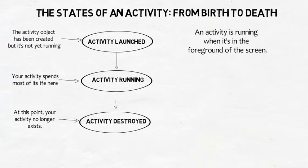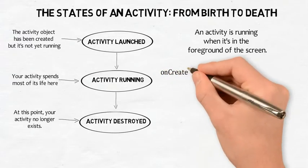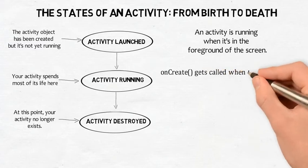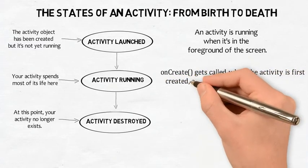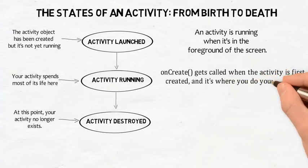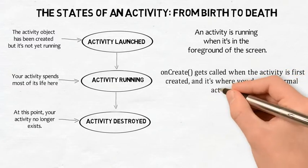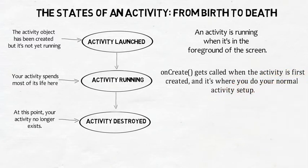These are lifecycle methods that your activity inherits and which you can override if necessary. The onCreate method gets called immediately after your activity is launched. This method is where you do all your normal activity setup, such as calling setContentView. You should always override this method; if you don't, you won't be able to tell Android what layout your activity should use.